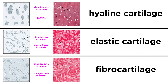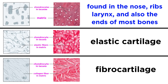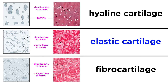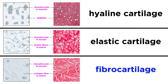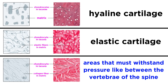There are three types: hyaline, elastic, and fibrocartilage, and skeletal cartilage is comprised of all three. Hyaline cartilage makes up the most skeletal cartilage, found in the nose, the ribs, the larynx, and the ends of most bones, providing support. Elastic cartilage is more stretchy, found in the ears and the epiglottis, the flap that covers the opening of the larynx when we swallow. Then highly compressible fibrocartilage can be found in areas that must withstand lots of pressure, like between the vertebrae of the spine.